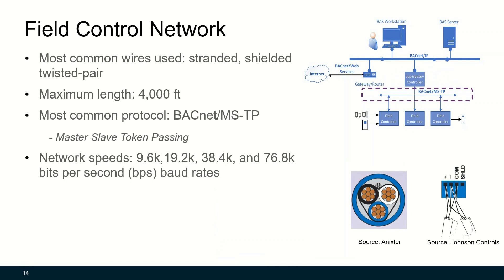The field control network is used to communicate among field controllers. The most common wires used are stranded, shielded, twisted pair. The maximum length is about 4,000 feet. The most commonly used protocol is BACnet MSTP (Master-Slave Token Passing). The network speed ranges from 9.6 kilobits per second to 76.8 kilobits per second.